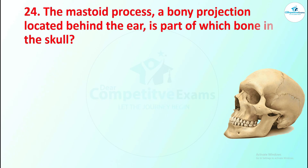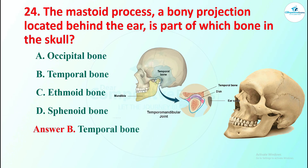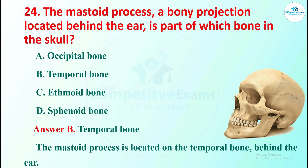Question 24: the mastoid process, a bony projection located behind the ear, is a part of which bone in the skull? Options are occipital bone, temporal bone, ethmoid bone, or sphenoid bone. The right answer is temporal bone. The mastoid process is located on the temporal bone, behind the ear.